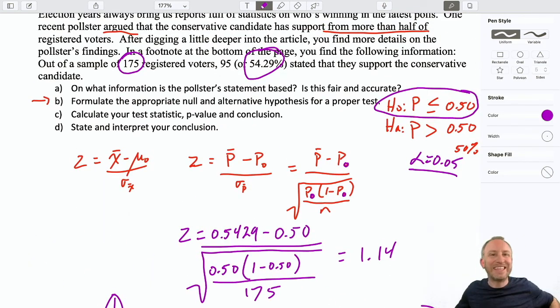This all leads us to not reject that null hypothesis. We have insufficient evidence to show that this conservative candidate's lead is statistically significant. So this pollster is selling advertising space. They've got a nice headline. Conservative candidate is in the lead. Gets things all exciting. But no. That lead is not statistically significant. We're unable to show that they have more than 50% of the support of registered voters. That's it. Thanks for watching. We'll do a few more of these. Take care.